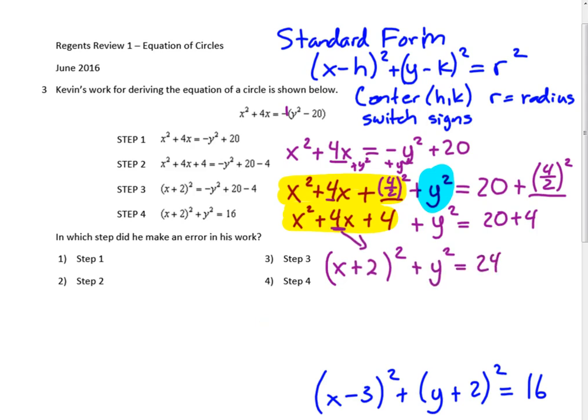Now this is written in standard form at this point. So the center is going to be (-2, 0). It's 0 because there's nothing being added to the y². And then the radius—if r² is 24, the radius would equal √24. And we might need to put that in simplest radical form or to the nearest tenth.